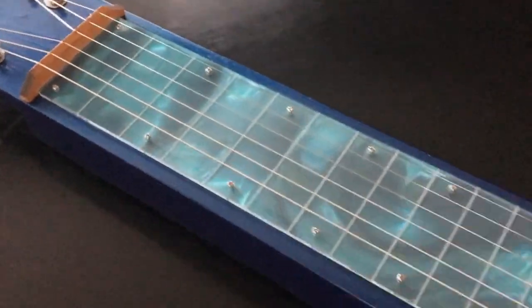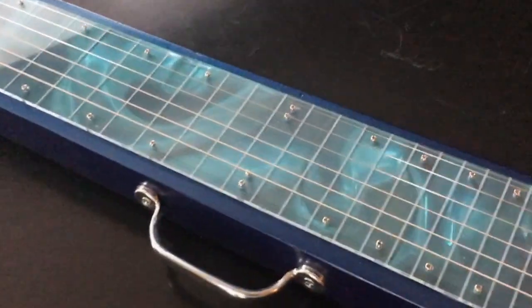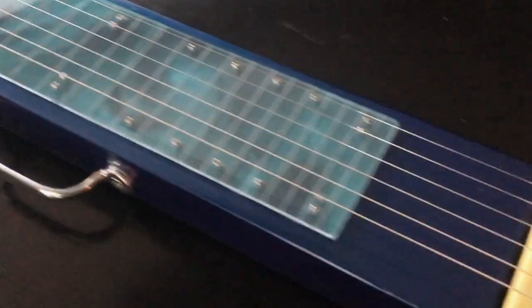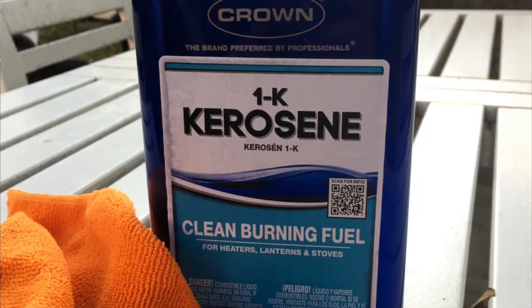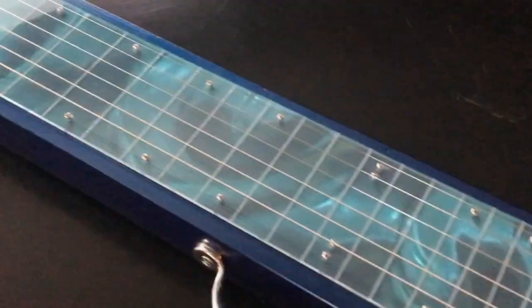So I used some kerosene. I had to do some Googling to figure out what gets paint off plexiglass without stripping it. And for the record, kerosene works really well. I did that and got the paint off.